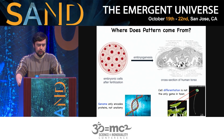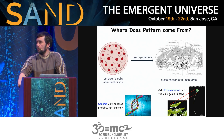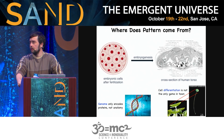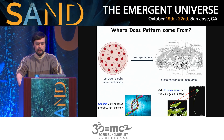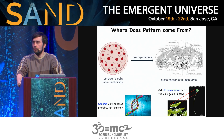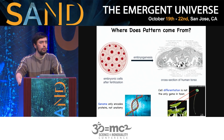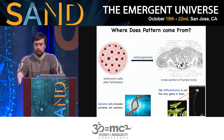What makes the teratoma different from the embryo is that it's missing the large-scale three-dimensional organization. So the question is: where does pattern come from? We all start life as a single cell. Here you're seeing the cross-section of a human torso — look at the complexity, how all the tissues and organs are in exactly the right place relative to each other. Where does that information come from?